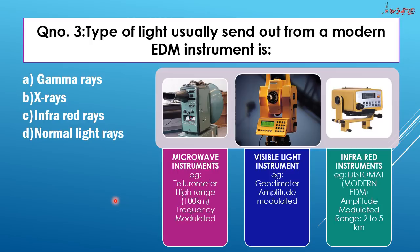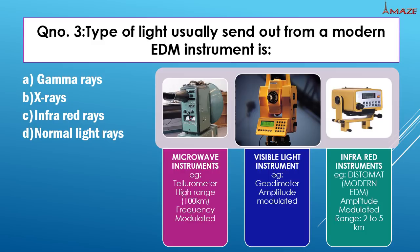Third question: The type of light usually sent out from a modern EDM instrument. There are three types of EDM instruments: microwave instruments, visible light instruments, and infrared instruments. For microwave instruments, an example is the tellurometer. For visible light instruments, the example is the geodimeter. For infrared instruments, the example is the distomat.